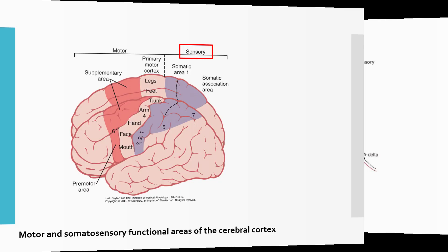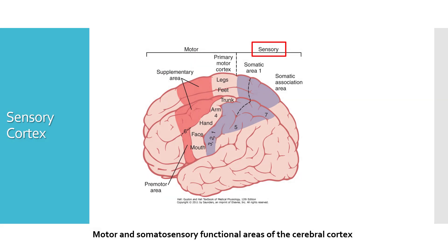Looking closely at the somatosensory cortex, there is an area labeled somatic area one. It is also evident that the motor cortex receives extensive input from the sensory cortex. Brodmann's areas five and seven of the cerebral cortex, located in the parietal lobe behind somatosensory area one, play important roles in deciphering deeper meanings of the sensory information in the somatosensory areas — therefore these areas are called somatosensory association areas.